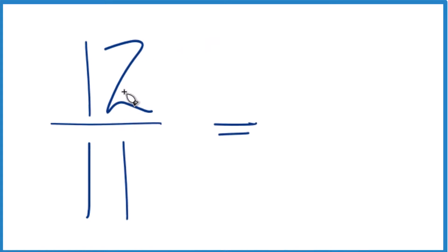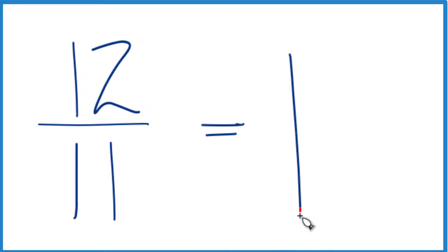We see that 11 goes into 12 just one time with one left over. So that one becomes the numerator. The remainder becomes the numerator, and then we just bring the 11 across like this, and we're done.